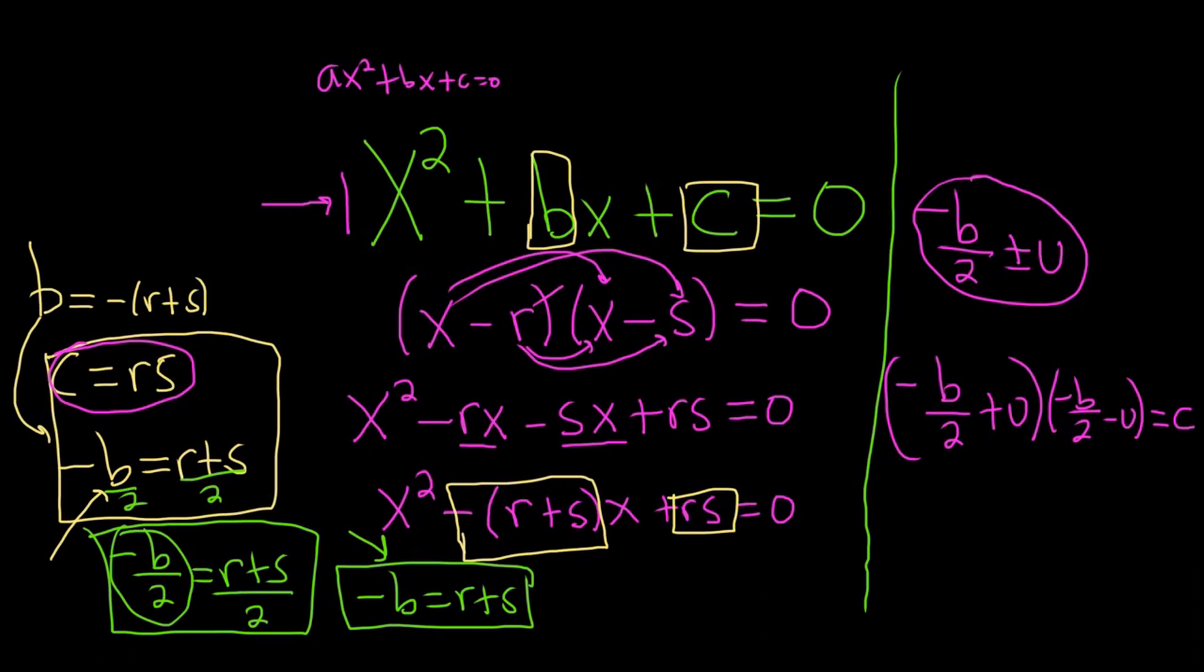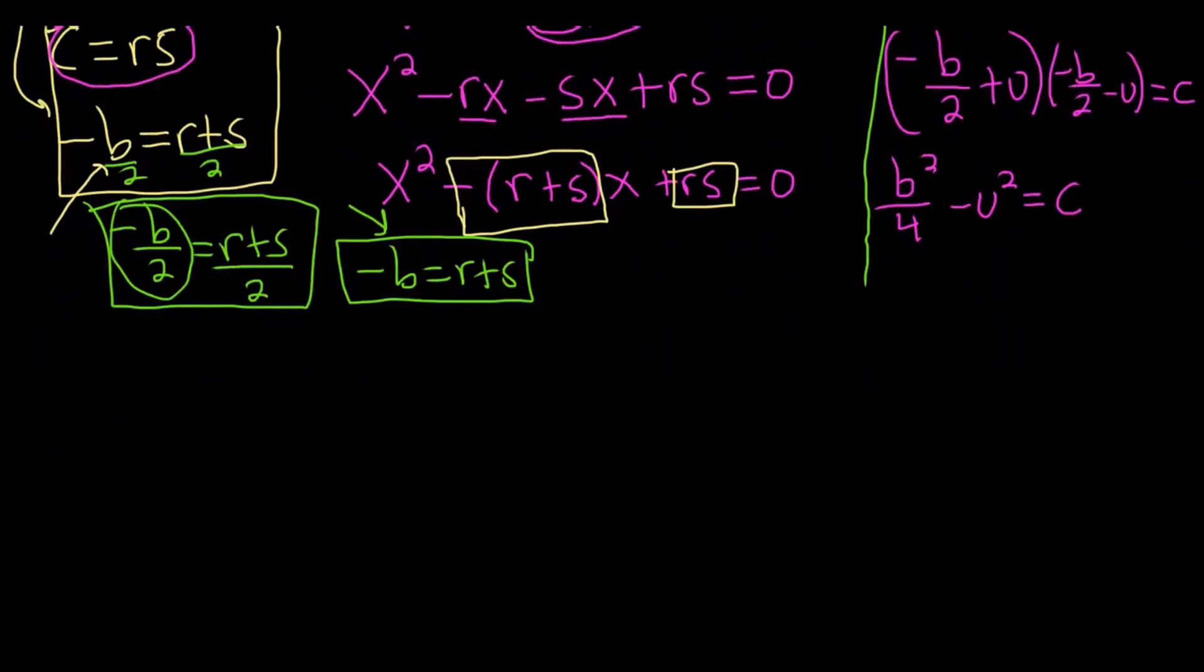This is the difference of squares, right? It's a minus b, a plus b. So it's b²/4 - u². And that's equal to c. I'm going to go ahead and scroll down a little bit so we can see a bit better. I'm going to subtract this from both sides, so we get -u² equals c - b²/4.